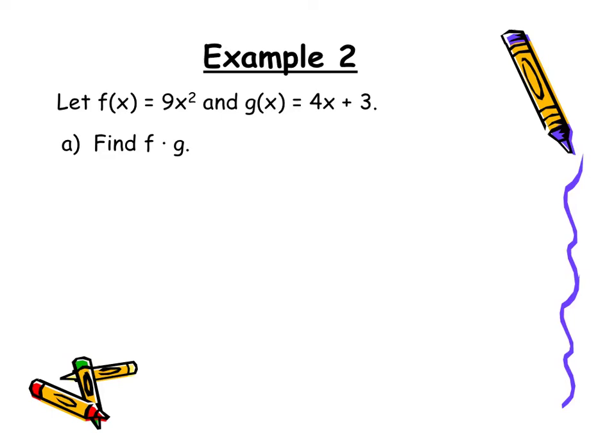In this video we'll do a couple examples of product and quotient. So first off we have the product of f of x and g of x. So f of x times g of x.